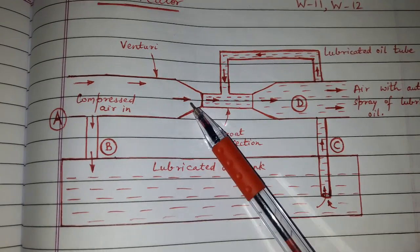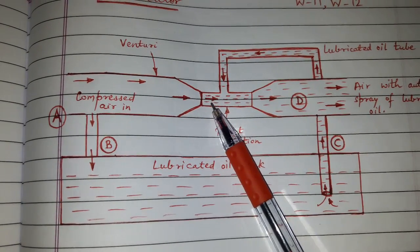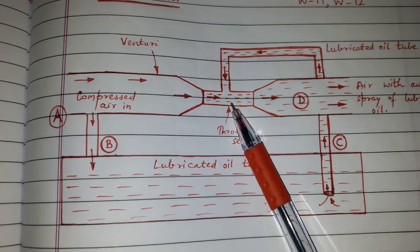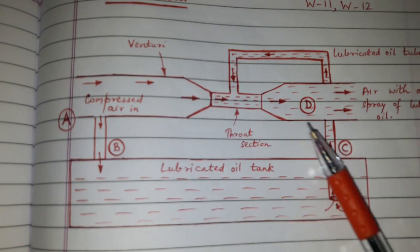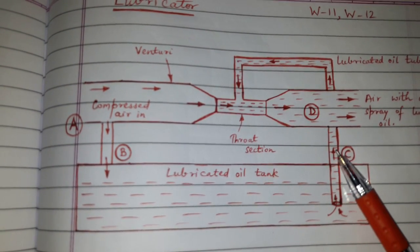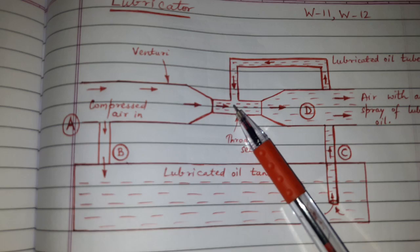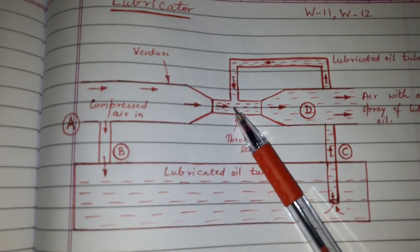When the compressed air passes through the throat section, the air pressure drops and the lubricant oil from pipe C rushes to the throat section in the form of spray.